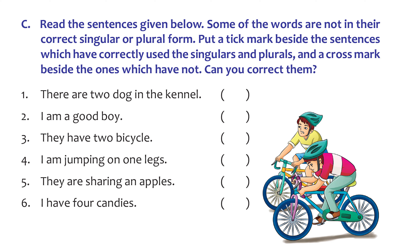The next activity is about singular and plural forms. There are a few sentences given — we look at them and check if they follow the rules. If not correct, put a cross mark; if right, put a tick. The first one: 'There are two dog in the kennel' — they're talking about two dogs but the S is missing at the end of dog, so put a cross mark. Next: 'I am a good boy' — that's correct, we're talking about one boy, no S needed. Third: 'They have two bicycle' — talking about two bicycles, so S is needed at the end, put a cross mark.